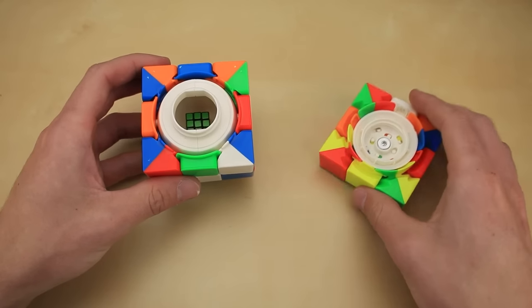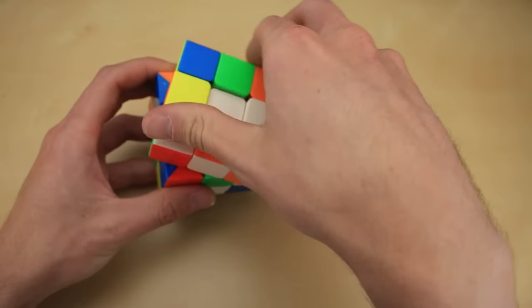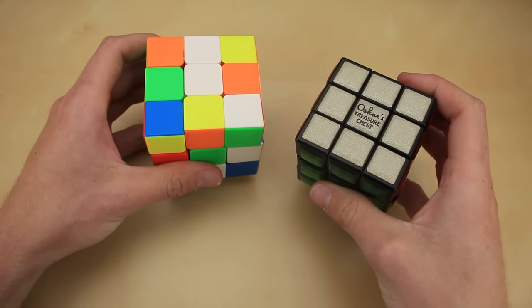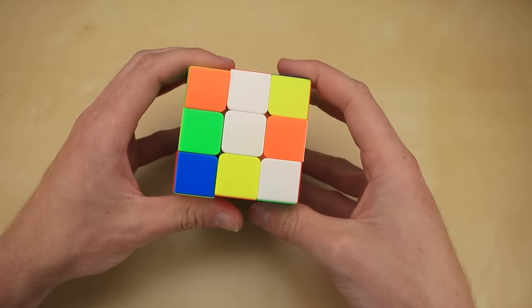So yeah, I think this is a pretty awesome way to add a secret combination to your treasure chest. I wouldn't necessarily recommend doing it the way that I did with a stickerless cube. If I were to do it again, I'd definitely use an original Oscar's treasure chest and swap around the stickers like I talked about originally.